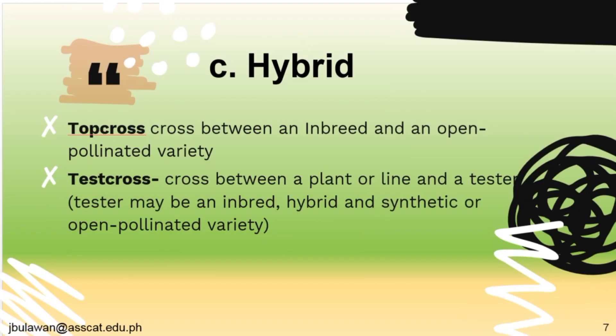For hybrids, we have the top cross — a cross between an inbred and an open-pollinated variety, like corn. Then for the test cross, it is a cross between a plant or line and a tester, which may be an inbred, hybrid, or synthetic or open-pollinated variety.